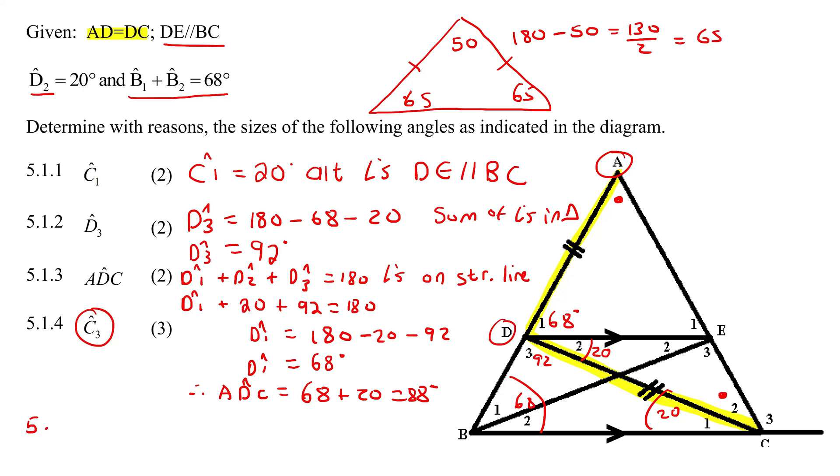So we can start off by saying in question 5.1.4, we could say that angle A is exactly the same as angle C2. That is because they are the angles opposite equal sides. So to work out A or C2, you would do exactly what we did over here. So you would say 180 minus 88, because these two together make up 88, and then that would give us 92. And then you would just say 92 divided by two, and that would be 46. So that means this one is 46, and this one is 46.